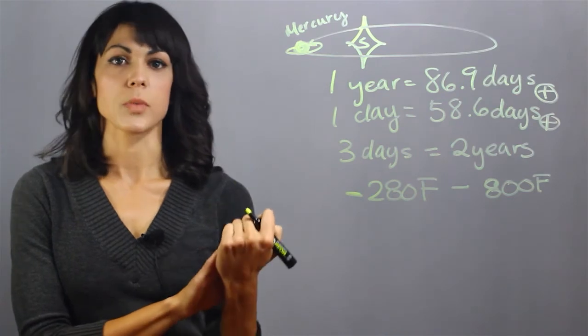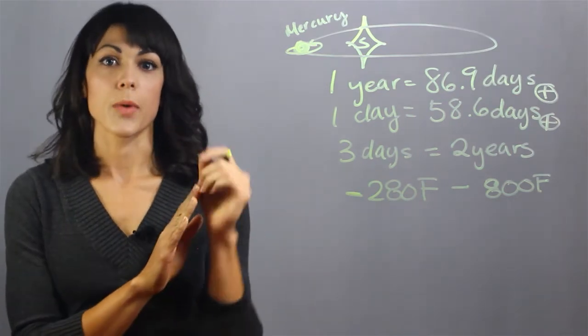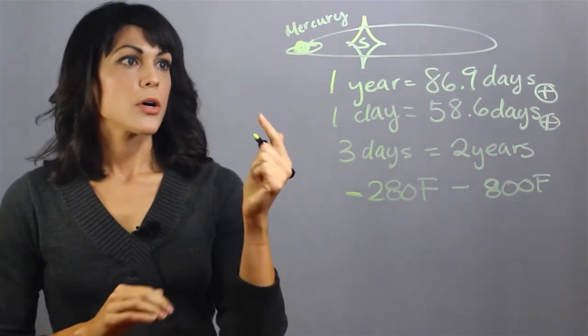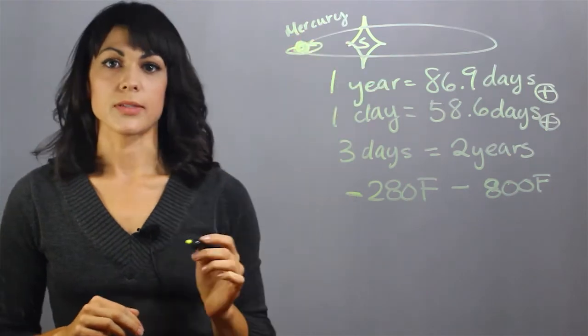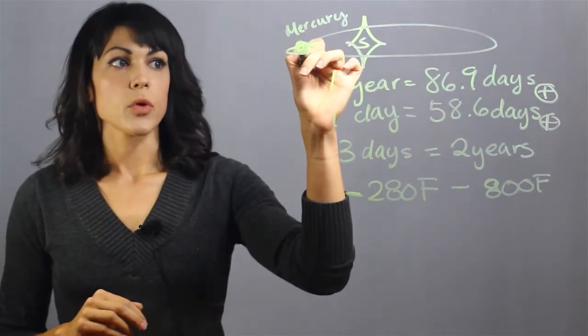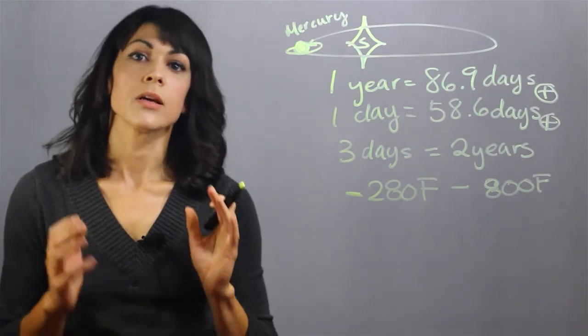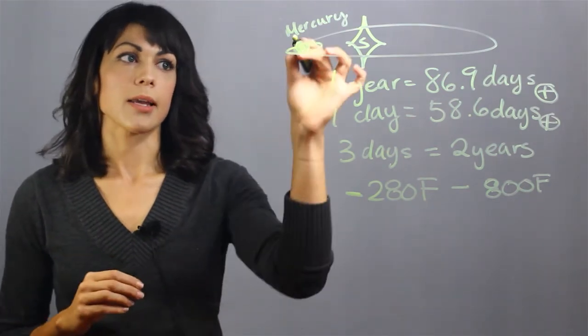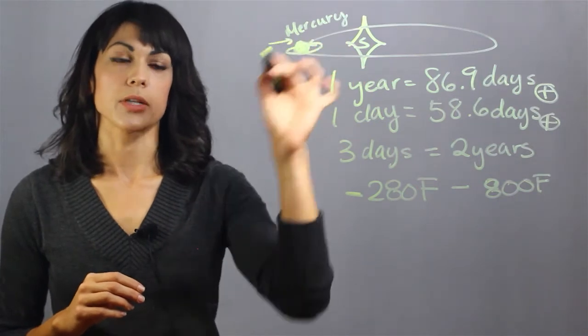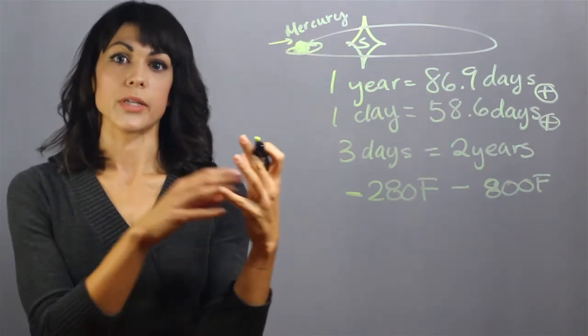The second challenge is going to be finding an orbit around Mercury. As you can tell, we're very close to the Sun. The gravitational force near Mercury is twice the gravitational force around Earth. That means any satellite approaching the Sun is going to be pulled into it.